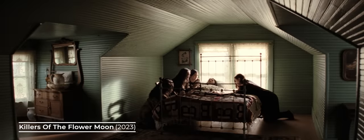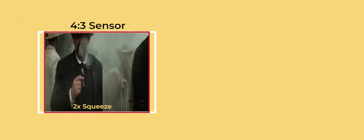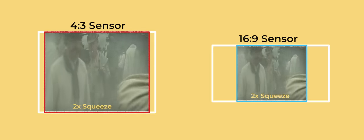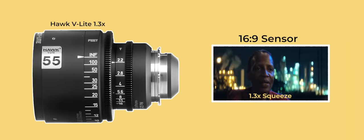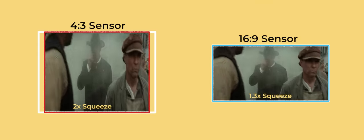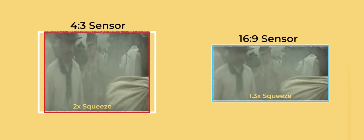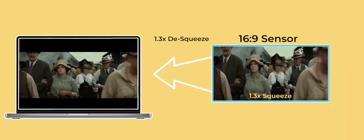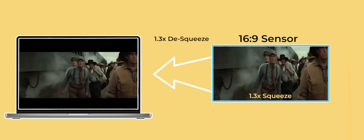However, not all digital sensors use such a tall 4:3 ratio — some sensors were designed to be more of a 16:9 size. There are some anamorphic lenses with a different 1.3x squeeze factor instead of the standard 2x squeeze that cover these wider sensors and still produce a widescreen image with a 2.40 aspect ratio.